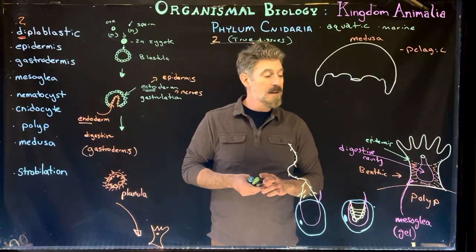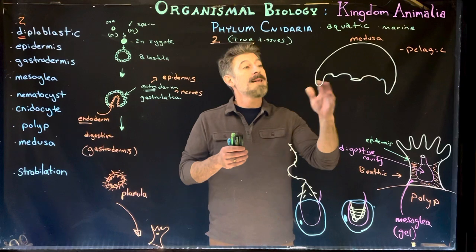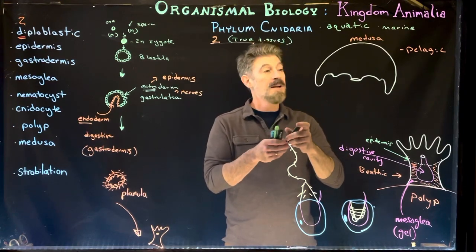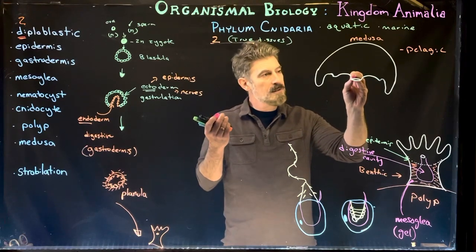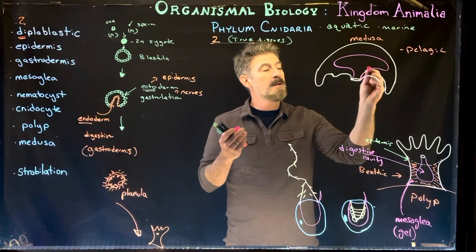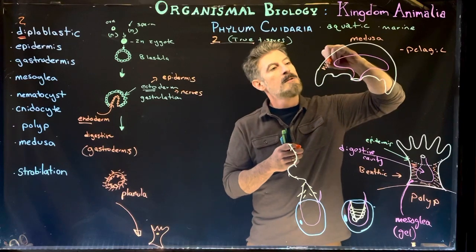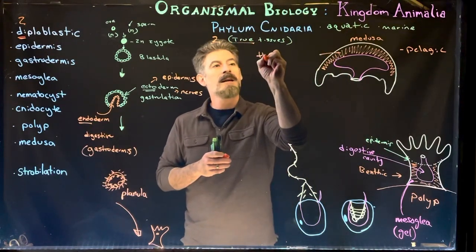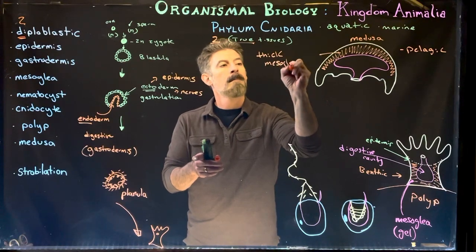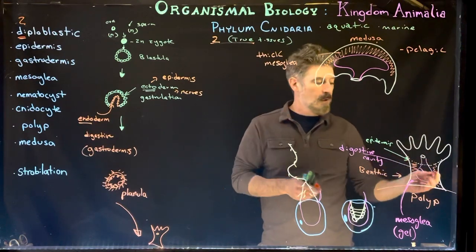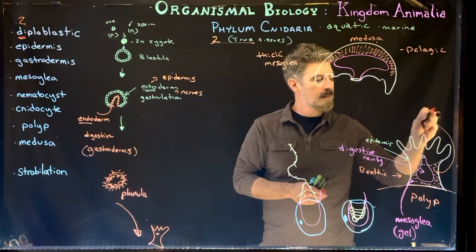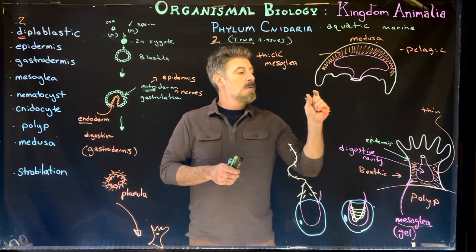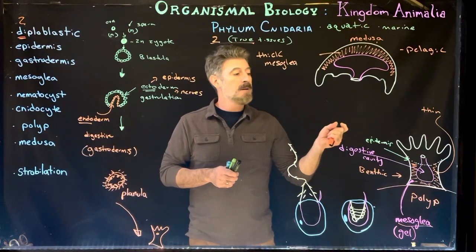There can be cells in the mesoglia layer, but the layer itself is made up of gel, not cells. In the medusa — sometimes called jellyfish, though they are not fish — the mesoglia is very thick, which is why they're called jellyfish: that jelly-like layer. In a polyp the mesoglia is usually very thin. It is an in-between gel layer but is not considered a third tissue type.